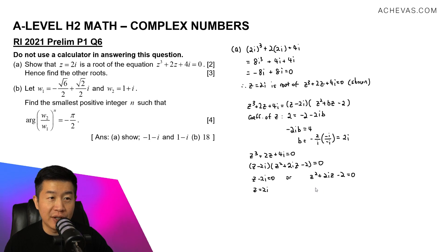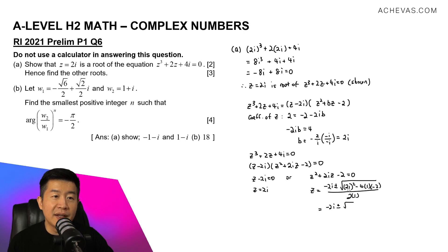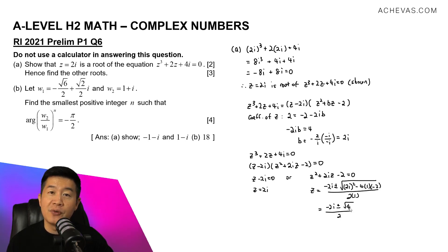Applying the quadratic formula to z² + 2iz − 2 = 0: z = (−2i ± √(b² − 4ac)) / (2a). Here b² = (2i)² = −4, and −4ac = −4(1)(−2) = 8, so b² − 4ac = −4 + 8 = 4. Dividing by 2, we get z = −i ± 1.